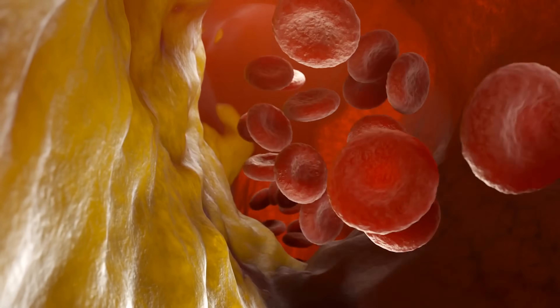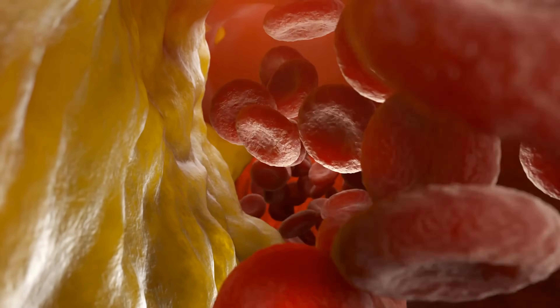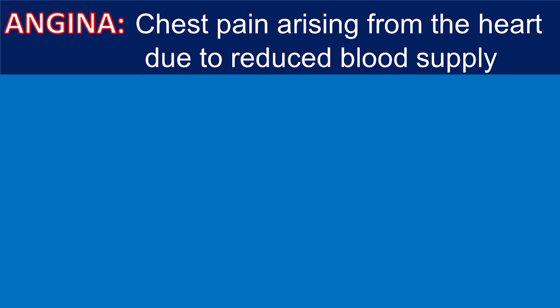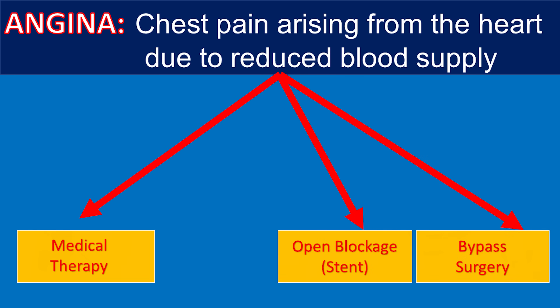Chest pain or discomfort arising from the heart due to reduced blood supply is referred to as angina pectoris. There are two main types of treatments for people with chest pain. The first is medical therapy, meaning treatment with medications. The second is interventional treatment with procedures to open or bypass the narrowed artery or arteries. The goals of these treatments are to improve the person's quality of life and to reduce the chest pain symptoms. Medications may also delay progression of the disease and thereby prolong life.